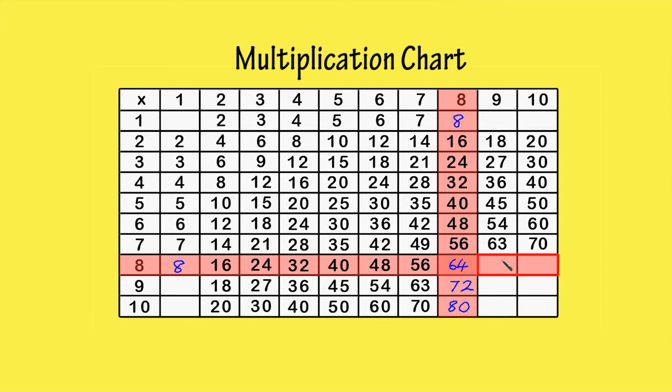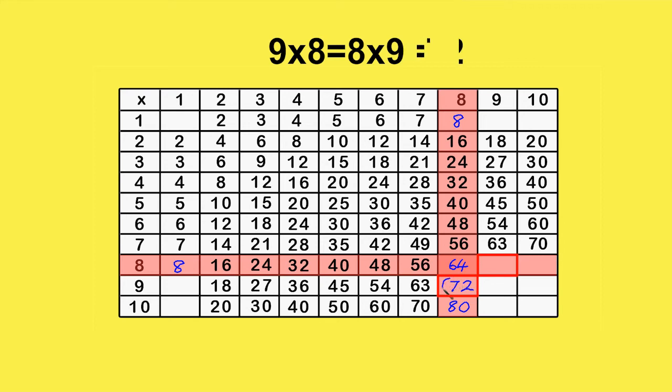But let's say we weren't sure how to fill in the last 2. Well, we know 9 times 8 equals 8 times 9, which is 72. So we can transfer that information over.